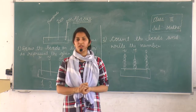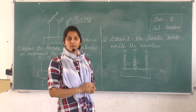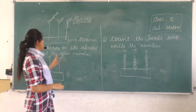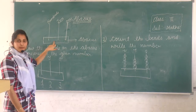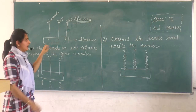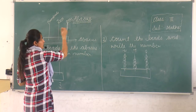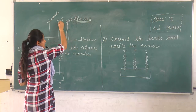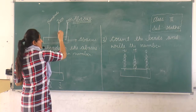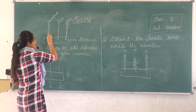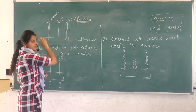Good morning students. Today's topic is the abacus. See here, one abacus is given with three spikes. The first one shows the ones place, the second one shows the tens place, and the third one shows the hundreds place.